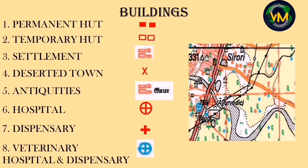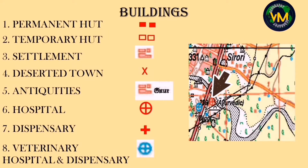In this map you can see the veterinary hospital in blue, and the red color hospital symbol near it has the word 'Ayurvedic,' meaning it is an Ayurvedic hospital.